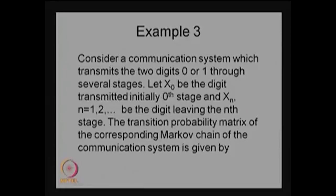Each stage is one random variable and you have a collection of random variables over the stages, therefore it is a sequence of random variables forming a stochastic process. This is a discrete time discrete state stochastic process because the possible values of xn are 0 or 1, so the state space is {0, 1}.